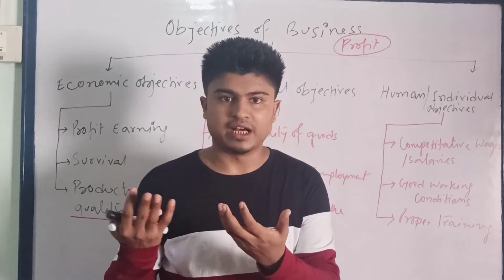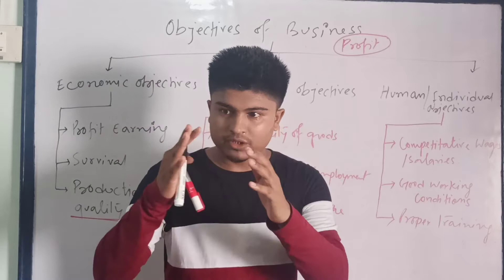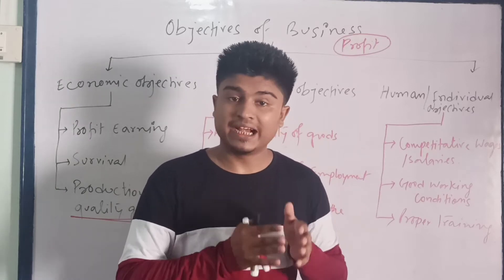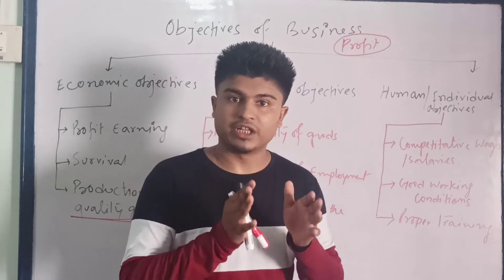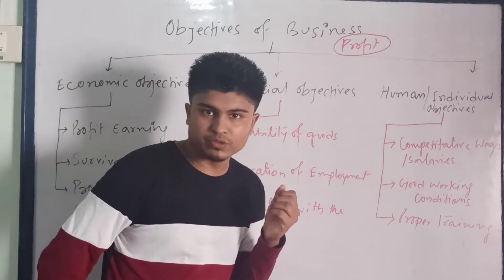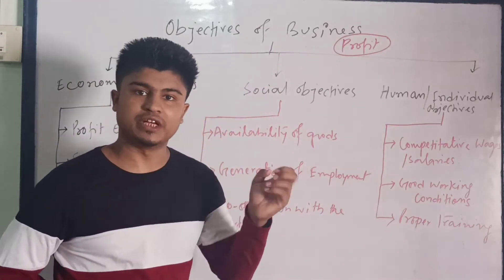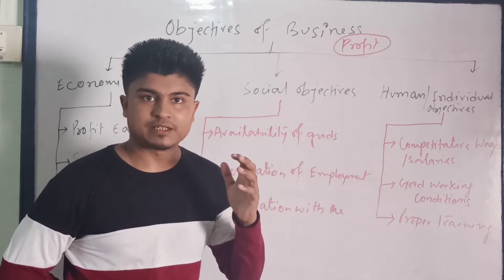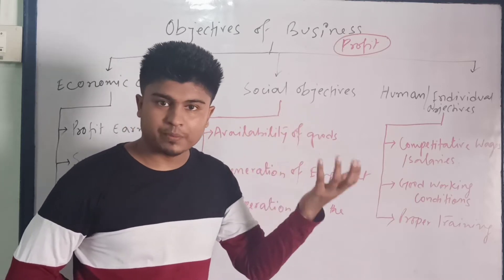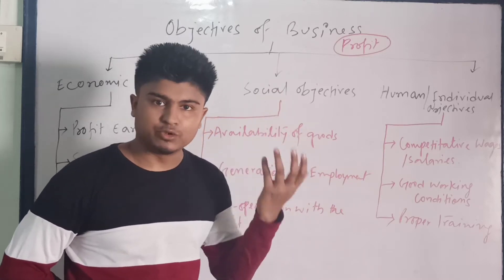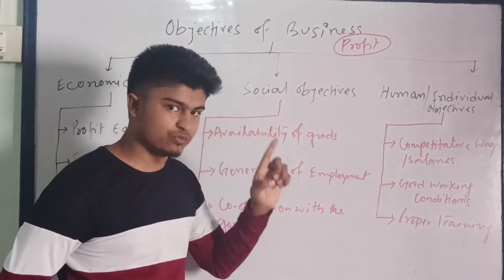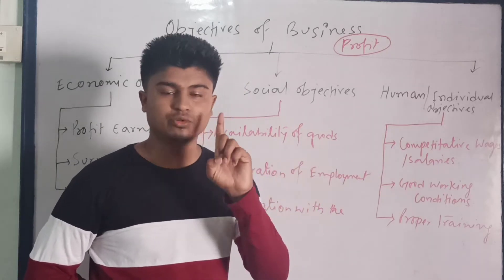Being part of a particular area or society, a business should have some responsibility and should perform those responsibilities for the welfare of society. The first social objective is availability of goods — the business should ensure that goods are available in all seasons, not just when demand is high. Business should not stop production when demand is low; it should ensure availability throughout the whole year.